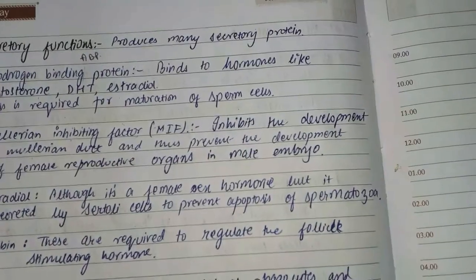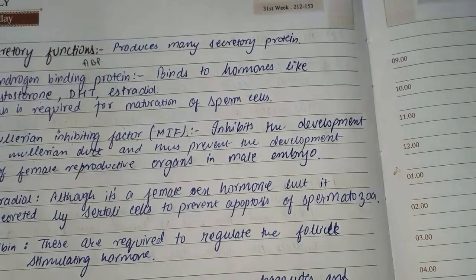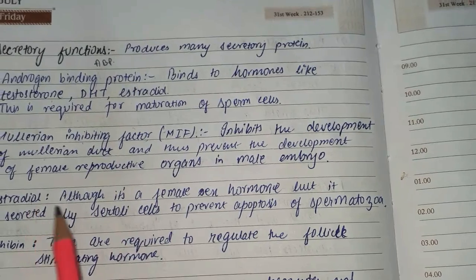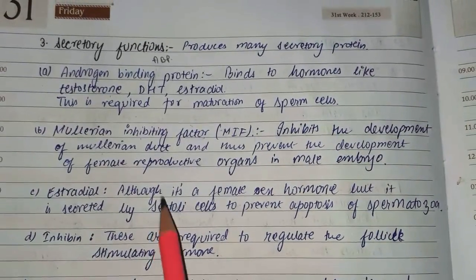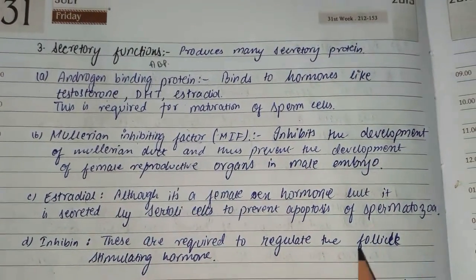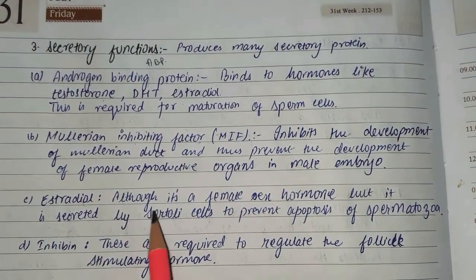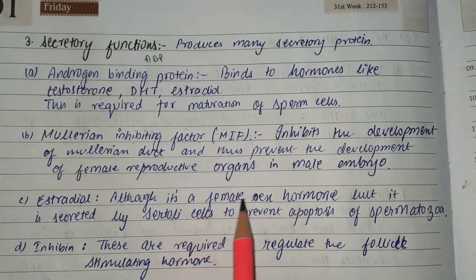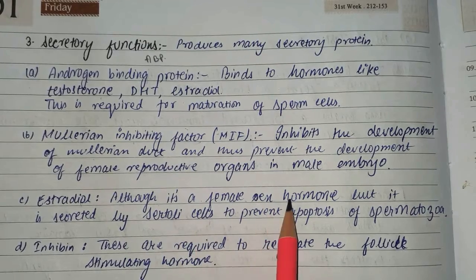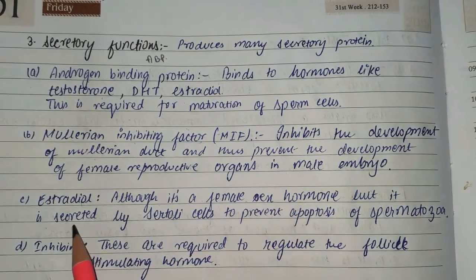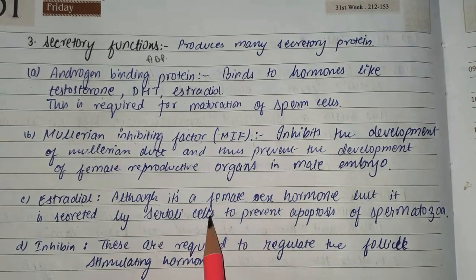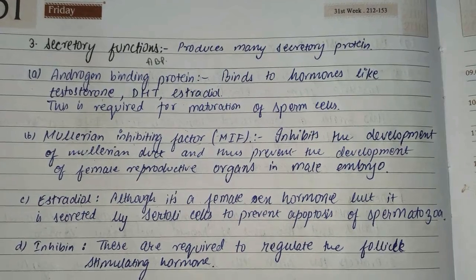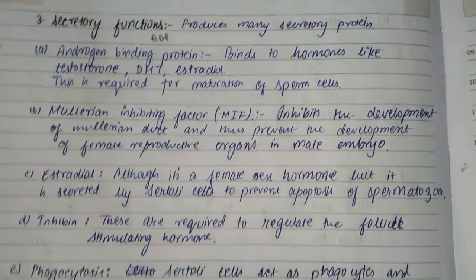In females, Mullerian inhibiting factor and androgen binding protein are absent, so the Mullerian duct develops while the Wolffian duct does not. Estradiol is also secreted by Sertoli cells to prevent apoptosis of spermatozoa, even though it is a female hormone.